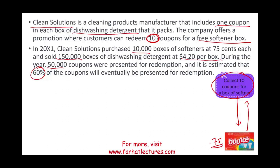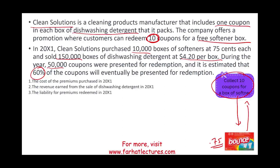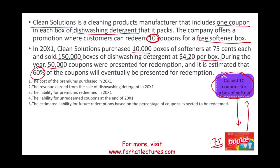We're going to answer a series of questions. First, what's the cost of premium purchased in 20X1? The revenue earned from the sale of dishwashing detergent? The liability for the premium redeemed in 20X1? The liability for unredeemed coupons at the end of X1? And the estimated liability for future redemption based on the percentage of coupons expected to be redeemed?